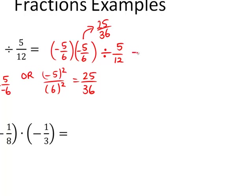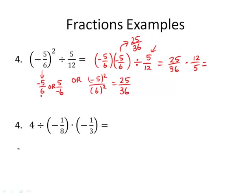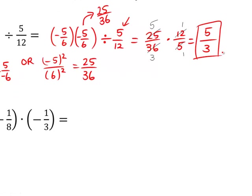So negative 5 sixths squared gave us 25 over 36, and then we want to multiply it by the reciprocal of what we were dividing by. Now we're at a multiplication, so we want to see if anything simplifies. 25 over 5 gives us 1 and 5; 36 and 12 have a common factor of 12, so that's 1 and 3. So when we multiply through, we get 5 times 1 is 5, and 3 times 1 is 3. You can write that as 1 and 2 thirds, but 5 thirds is fine for our purposes.